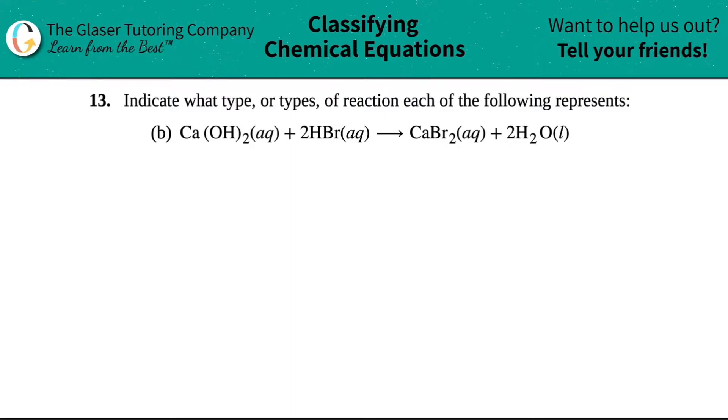Number 13: Indicate what type or types of reaction each of the following represents. We have letter B, which shows Ca(OH)₂ plus 2HBr yields CaBr₂ plus 2H₂O. They tell us each of the states, so let's analyze this for a little bit.